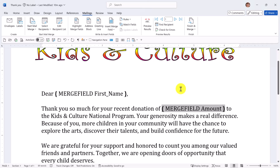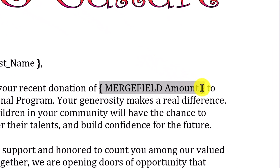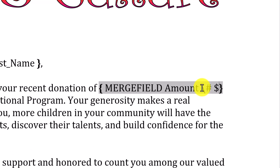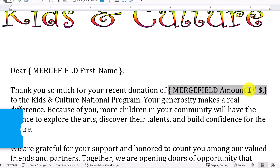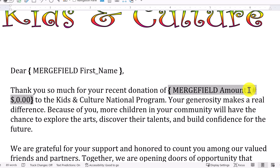Now here's the easy magic. We'll simply edit the field by adding the numeric switch to the end. For currency, type a backslash, pound sign or hashtag, then a dollar sign — use whatever symbol is appropriate for your currency — followed by comma 0.00. The decimal point and the two zeros are not needed if you don't want to show that much detail. If you only want to see the whole number, simply leave off the decimal places.